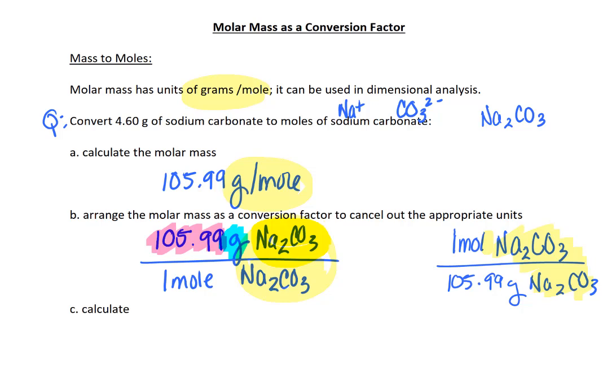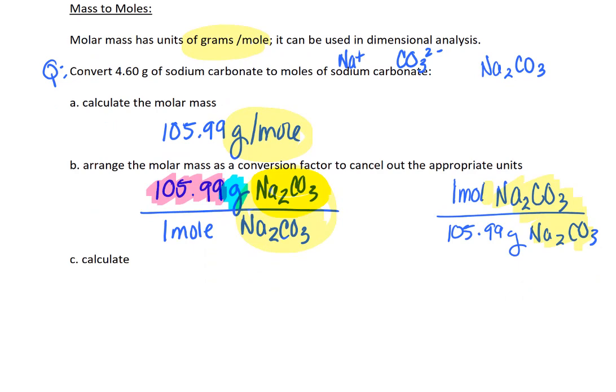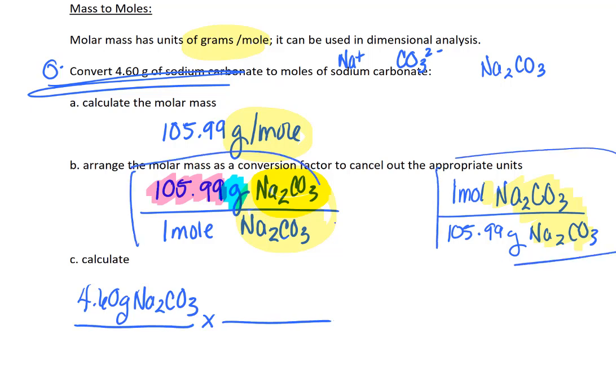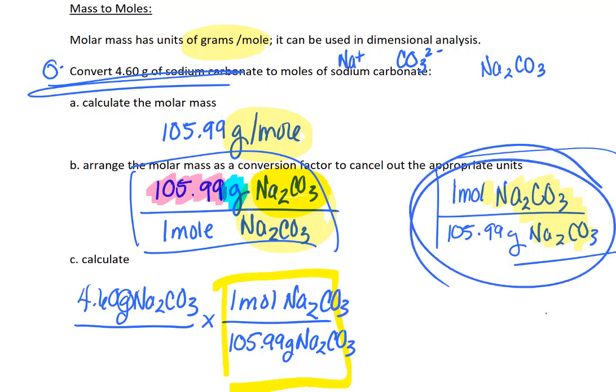So we have our two ways that we can set up our molar mass. Now the question is, which way are we going to use? So let's do a calculation. We're starting with the 4.60 grams of sodium carbonate that was in the initial question from up here. And we want to go from grams to moles. So we're starting with grams and we're going to pick one of these and we're going to put it here. And we need to choose the one that cancels the units. So if we have grams on top of this first term, we need grams on the bottom of the second term in order for them to cancel.